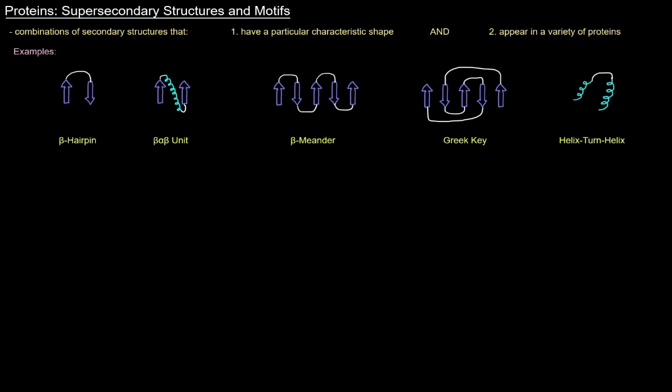Here we have a beta hairpin to the far left. We've got two anti-parallel beta strands connected by this little loop here, this little beta turn. That is a combination of two secondary structures — two beta pleated sheets — and that specific situation is a beta hairpin.